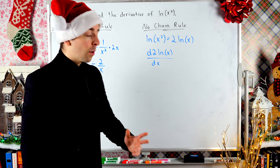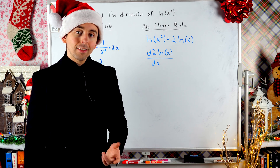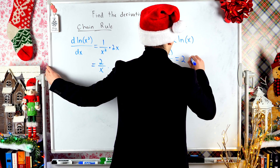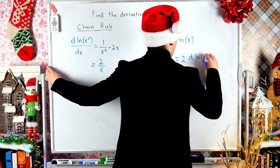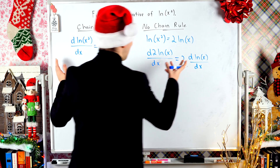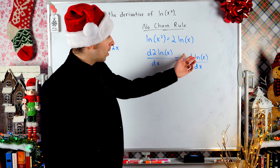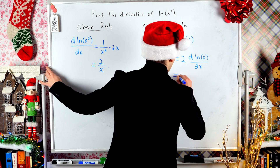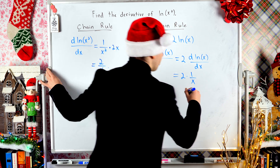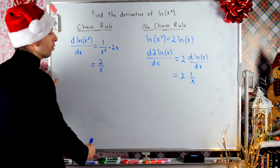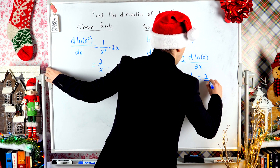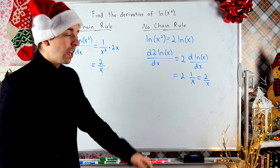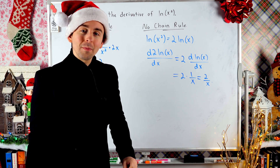So the natural log of x squared is 2 times the log of x. Pretty nice. Now we're taking the derivative of 2 times log x with respect to x. That's the same as just 2 times the derivative of the natural log of x. We can take the 2 outside of the derivative, and the natural log of x has a derivative of 1 over x. Simple as that. So our final answer is 2 times 1 over x, which is more tastefully written as 2 over x. That's how we can take the derivative of the natural log of x squared with and without the chain rule. Pretty cool.